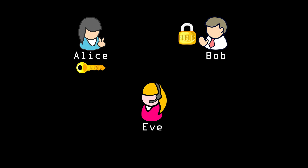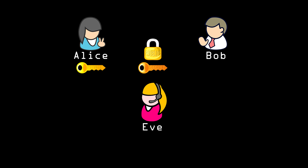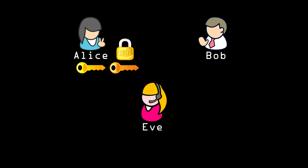Remember that the problem with secret key encryption was the difficulty in getting the key to the other person securely. Now, since Bob has Alice's public key, he can generate a secret key and send that to Alice, encrypted with her public key. They can then communicate as usual with secret key encryption, and Eve has no way of getting the encryption keys.